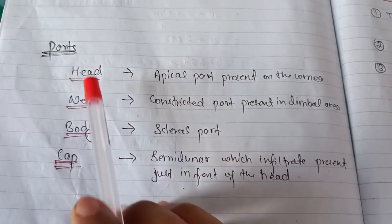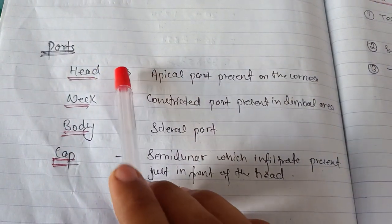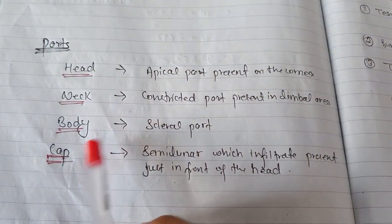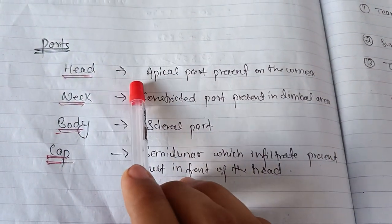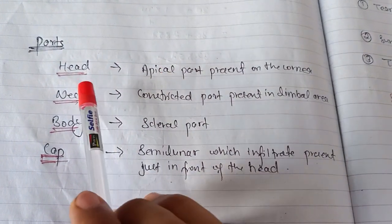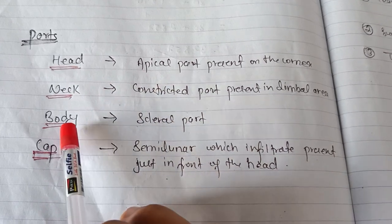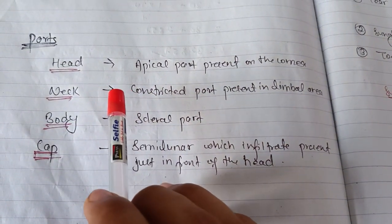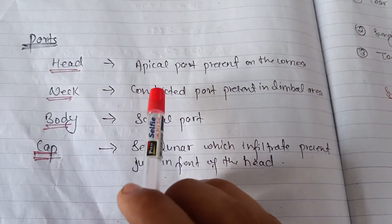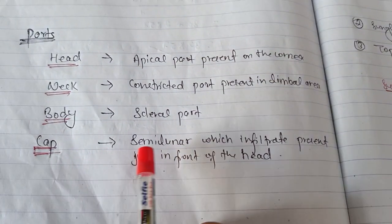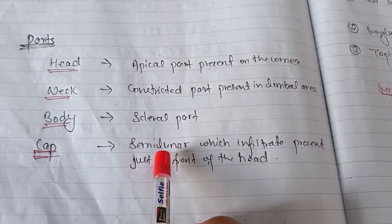Talking about its parts, there are four parts: head, neck, body, and cap. Head means the apical part which is fused on the cornea. Neck means the constricted part which is fused in the limbal area. Body means the part which is in the sclera. Cap means the semilunar infiltrate just in front of the head.